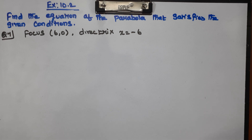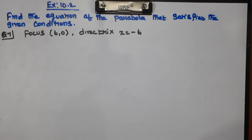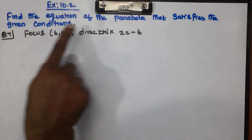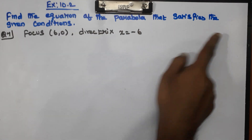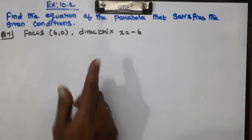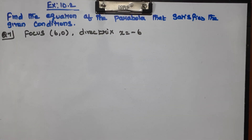Hello students, we are going to talk about this video. Question number 7, exercise 10.2 coding section. Question number 7: Find the equation of the parabola that satisfies the given conditions.